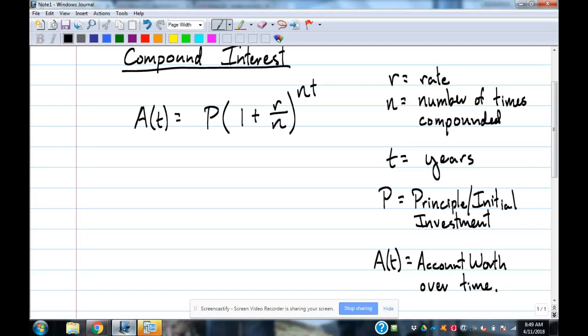A of t, so it's just a function of time, is what it is. So P is the principal investment. That's how much money you put into the savings account. That's your initial amount in day one, what you start with. One, that's just the number one, always going to be there. Plus r over n.